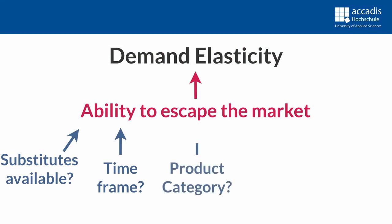Another factor to consider is the category of the product itself you are analyzing — is it a specific brand or is it an entire category? A specific brand typically has more substitutes. You can replace Coca-Cola with Pepsi, Fritz-Cola, or Sinalco. But if you use a broader definition, soft drinks as a whole, it will be much harder to find appropriate substitutes. You may for example drink water or tea instead of soft drinks, but those will not be perfect substitutes. The next factor is whether the product is considered a necessity or a luxury good. Necessities such as basic food items or essential medications often have inelastic demand because consumers need them regardless of price changes. On the other hand, luxury items like high-end fashion or expensive vacations tend to have more elastic demand, as consumers can easily cut back or choose alternatives when prices rise.